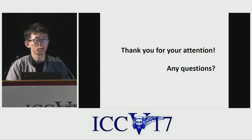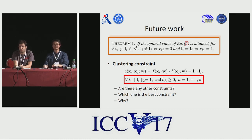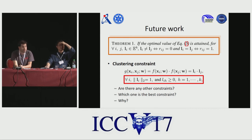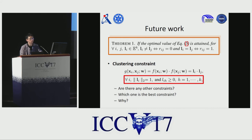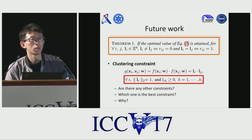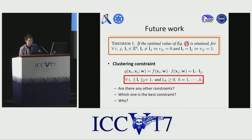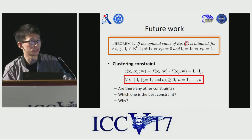Thank you for your attention and questions. An audience member asked: on the slide with the MNIST experiment, the points were shaped like a star. Why is that? Did you use something like a capsule neural network or something similar?